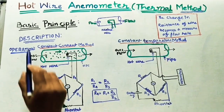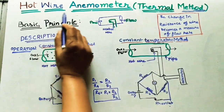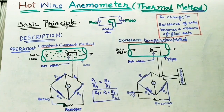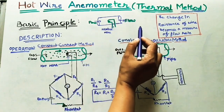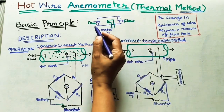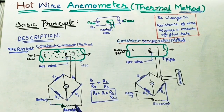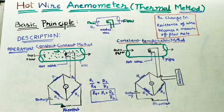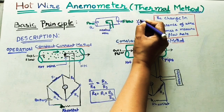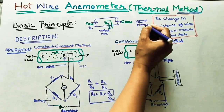In today's class we will discuss about the hot wire anemometer, or we can call it the thermal method. This hot wire anemometer will find the rate of flow in a given instrument — how much volume of liquid or fluid is coming from the given instrument. It will find the discharge Q value, in meter cube per second, which is volume by time.